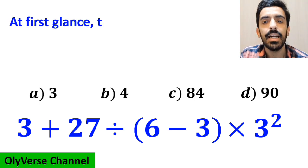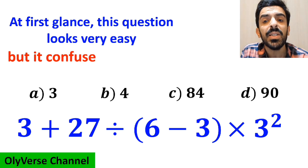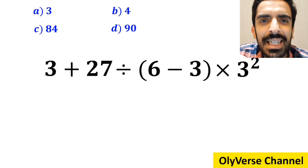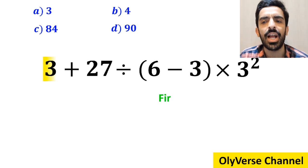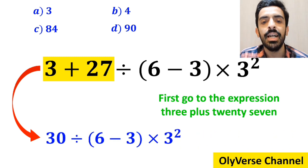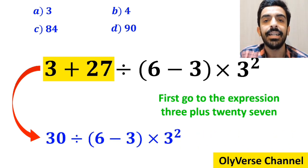At first glance, this question looks very easy, but it confuses almost everyone. Let's dive in and break it down step by step together. Many people, when solving this question, first go to the expression 3 plus 27, and instead write 30 divided by 6 minus 3 inside the parenthesis, then times 3 to the power of 2.